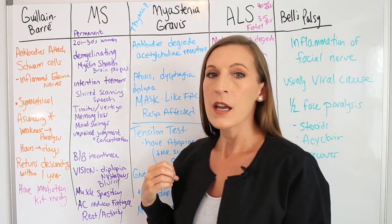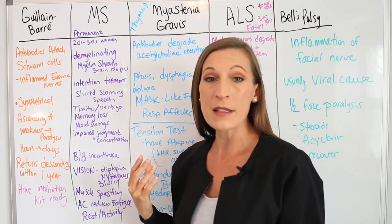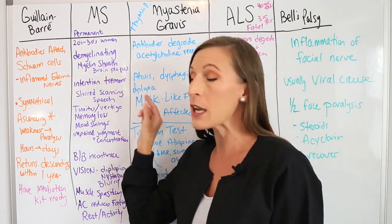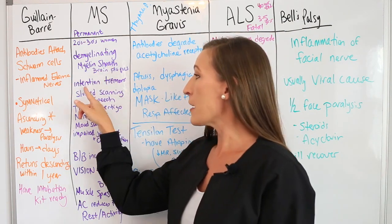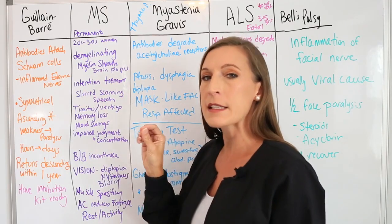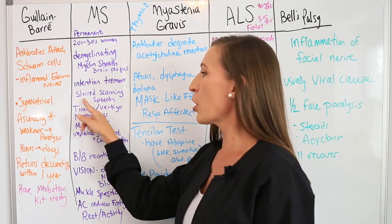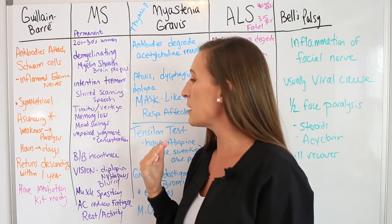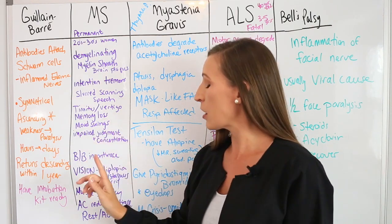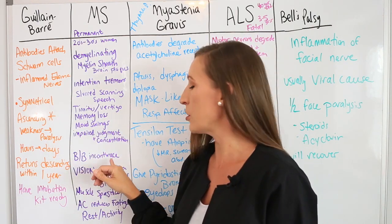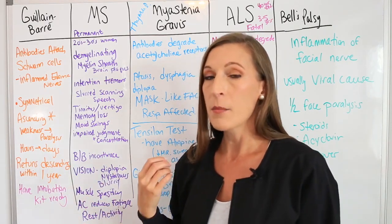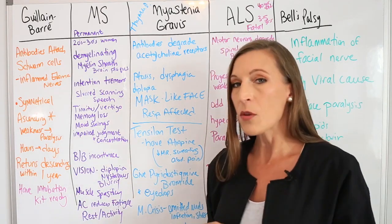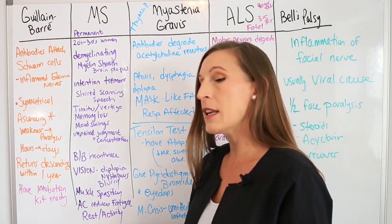Multiple sclerosis is a permanent disease. It affects mostly women in their 20s to 30s. It is a demyelinating disease of the myelin sheath, with brain plaques visible on MRI. It has intention tremors — this is the only one with intention tremors — slurred scanning speech, tinnitus, vertigo, ringing in the ears, dizziness, memory loss, mood swings, poor judgment, concentration issues, and bowel and bladder issues.